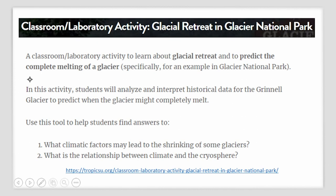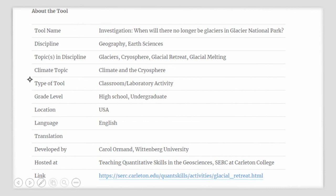A short classroom lab activity drives home the point that glaciers are indeed shrinking due to climate change and allows students to understand at what point a glacier might completely vanish or melt from the earth. This classroom lab activity will allow you to teach about glacial retreat. In this activity, your students can analyze and interpret historical data using one particular glacier — the Grinnell Glacier — to predict when it might completely melt. This tool is present at SERC at Carlton College. Dear geography teachers, we hope you find these teaching tools and lesson plans useful — they will not only enable your students to understand more about topics in geography, but also learn more about climate change.